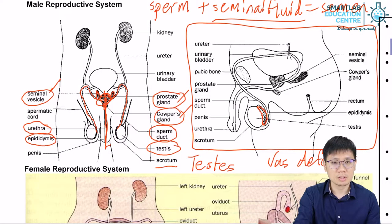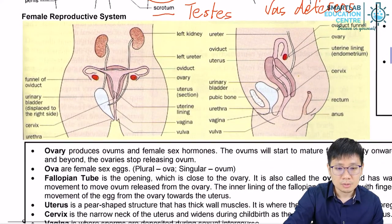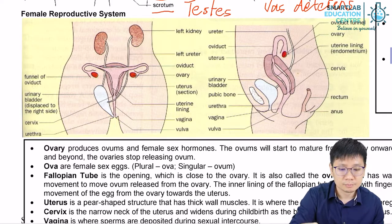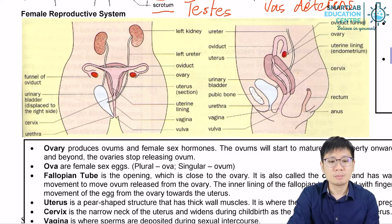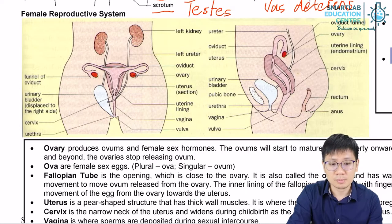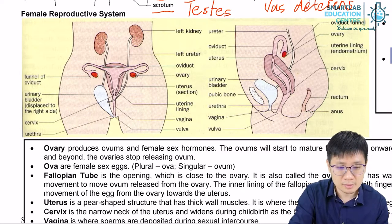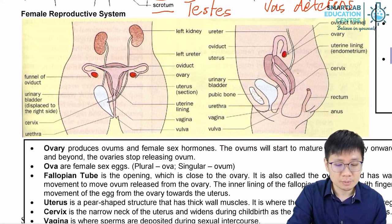Now let's talk about the female reproductive system. The female reproductive system may look a bit simpler in picture but its functions are quite complex. Let's talk about the anatomy first.